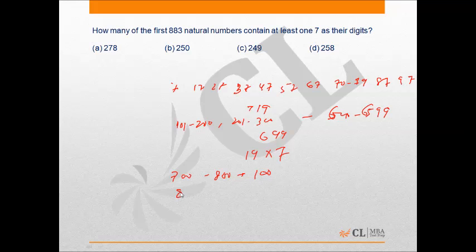So the total number of numbers out of the 883 that contain at least one 7 is